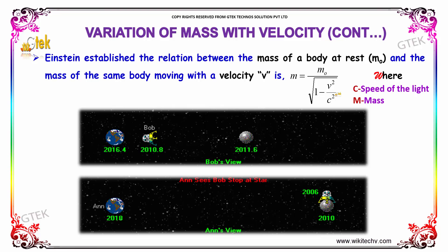This is the variation of mass with velocity, as given by Einstein. Where C is the speed of light and M is the mass of the object.